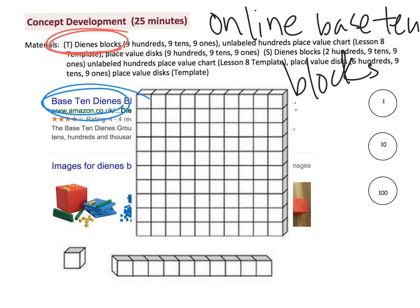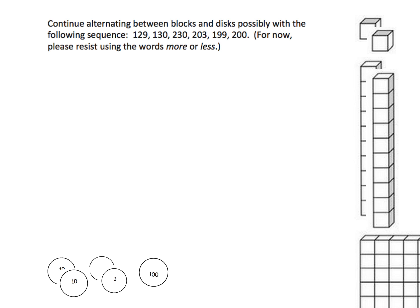So let's get going with the nuts and bolts of the math. In the lesson, in the concept development, the idea is you're going to build a number and you're going to build it twice. First, you're going to build it with base 10 blocks. Then you're going to build it with your place value disks and we're going to allow students the opportunity to see how the two things are related.